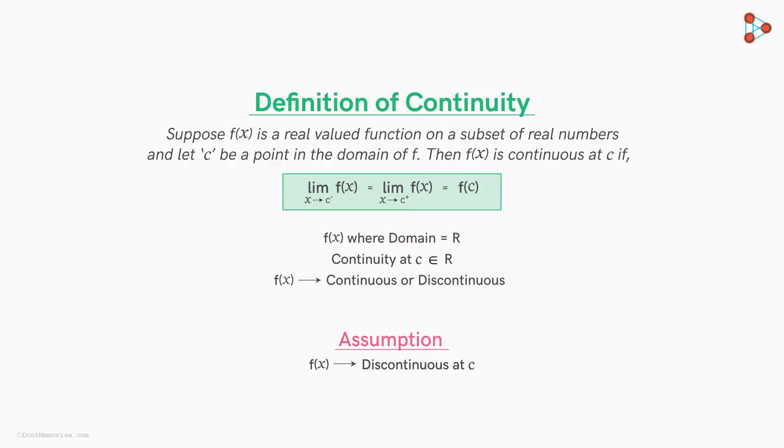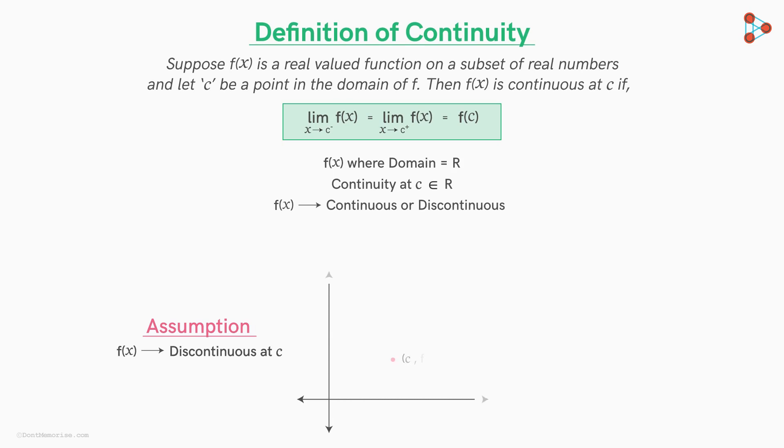The similar argument can be modelled for our function f if it's discontinuous at a point. The point c comma f of c, no matter where it lies on this vertical line, it will not be connected with either the part of the graph on the left side or on the right side or even both. And this is irrespective of what the graphs are on the left and the right and as said earlier, irrespective of where this point lies.